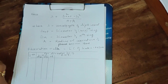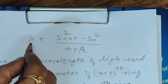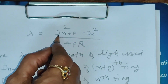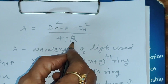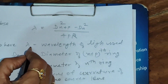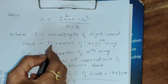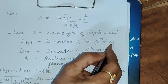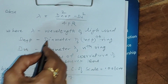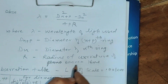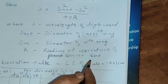To start with the experiment, this is the formula for determination of wavelength by Newton's rings: lambda is equal to (D_{n+p})² minus D_n² divided by 4pR, where lambda is the wavelength of light used which is to be determined, D_{n+p} is the diameter of the (n+p)th ring, D_n is the diameter of the nth ring, and R is the radius of curvature of the plano-convex lens used to get the Newton's rings.